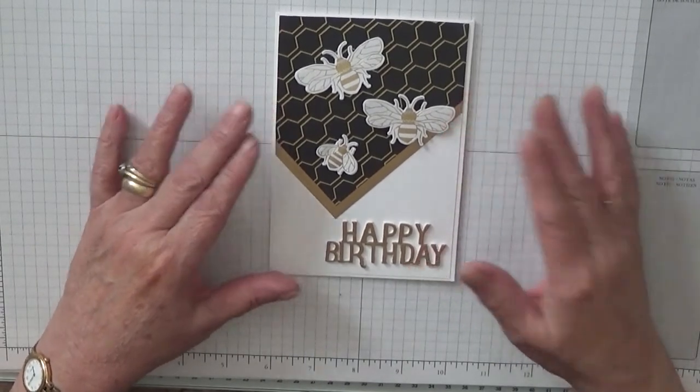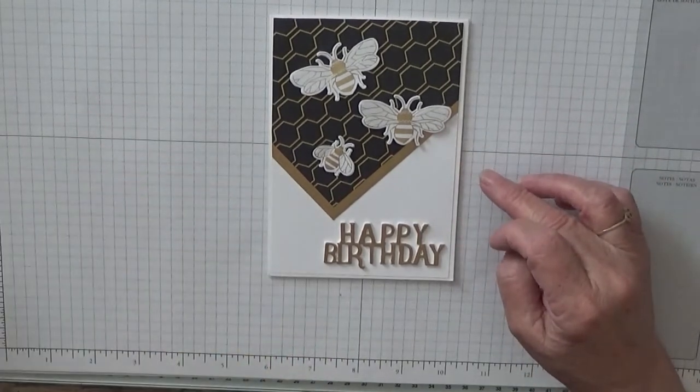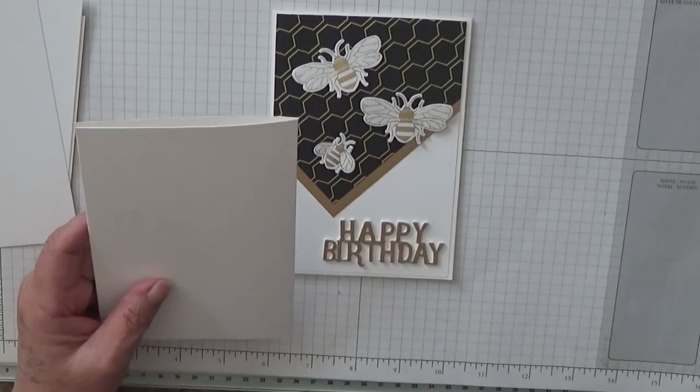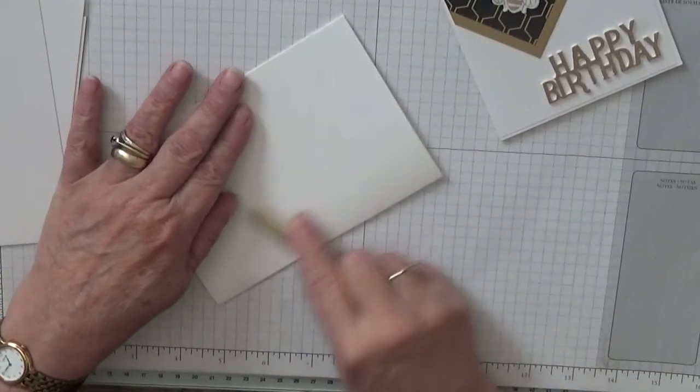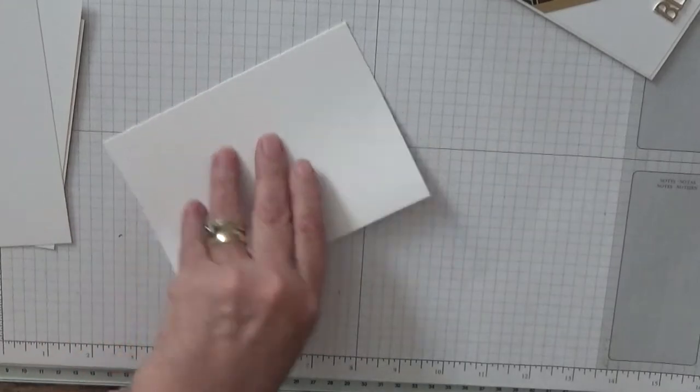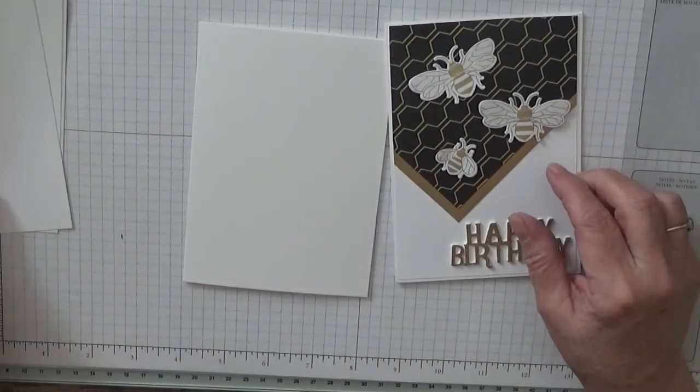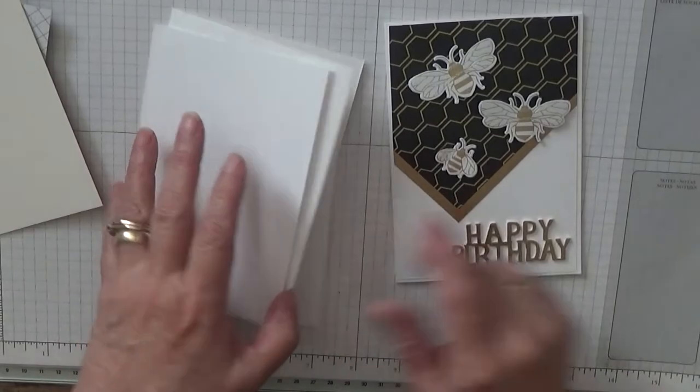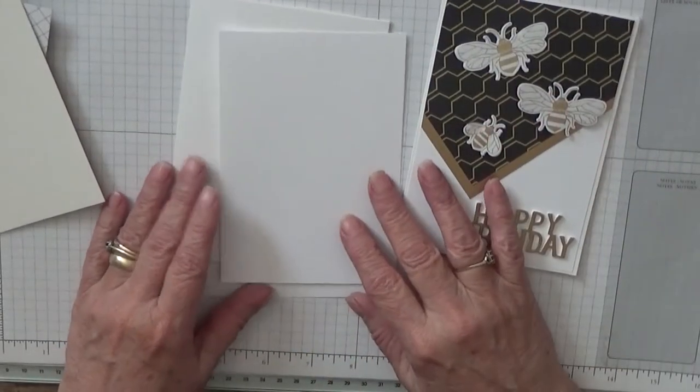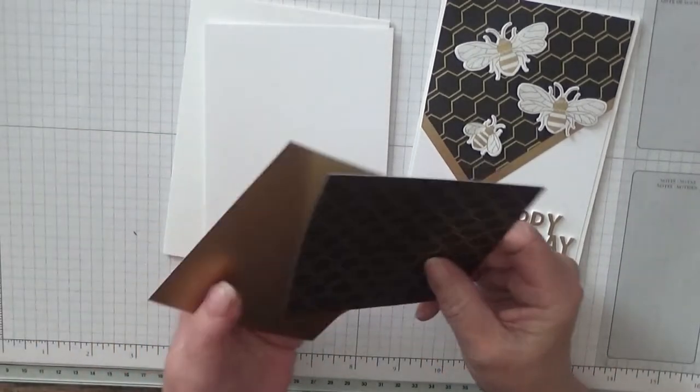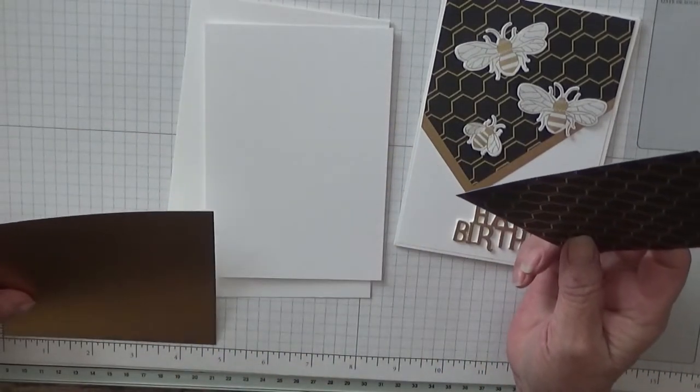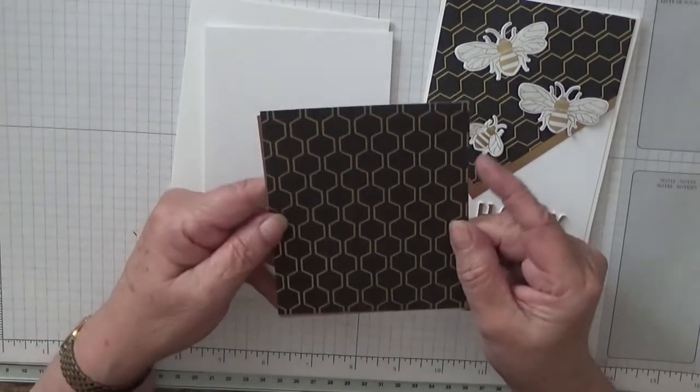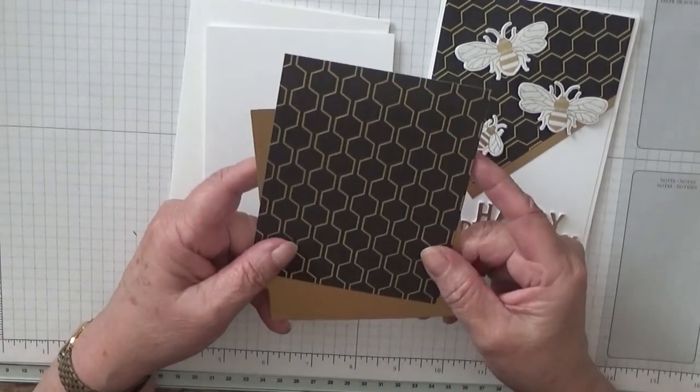To make this card I have a card base of 8 1/4 by 5 7/8 scored at 4 1/8, folded in half and burnished. I have two pieces of white cardstock, one for the front and one for the inside. Then I have a piece of gold foil card measuring 4 3/4 by 4 inches, and a bit of the DSP measuring 4 3/4 by 4 inches.